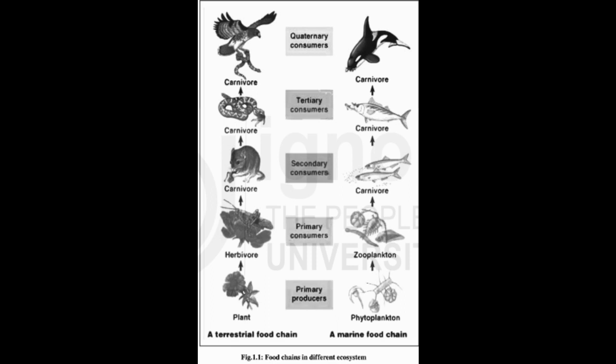Secondary carnivores are preyed upon by some larger carnivores. Tertiary carnivores or quaternary consumers include the animals which feed on the secondary carnivores and include lion, tiger, etc. These are not eaten by any other animals. The larger carnivores which cannot be preyed upon further are called the top carnivores. Fig. 1.1 shows food chains in different ecosystems.